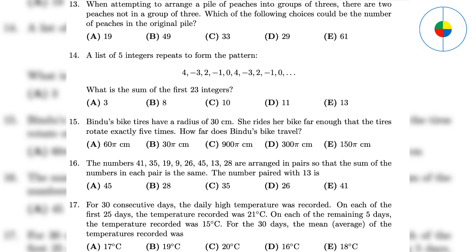Question 16: There are 4 pairs of numbers, so the sum of each pair is the sum of all numbers divided by 4. The sum of all numbers is 216. 216 divided by 4 is 54. So the number paired with 13 is 54 minus 13, which is 41.